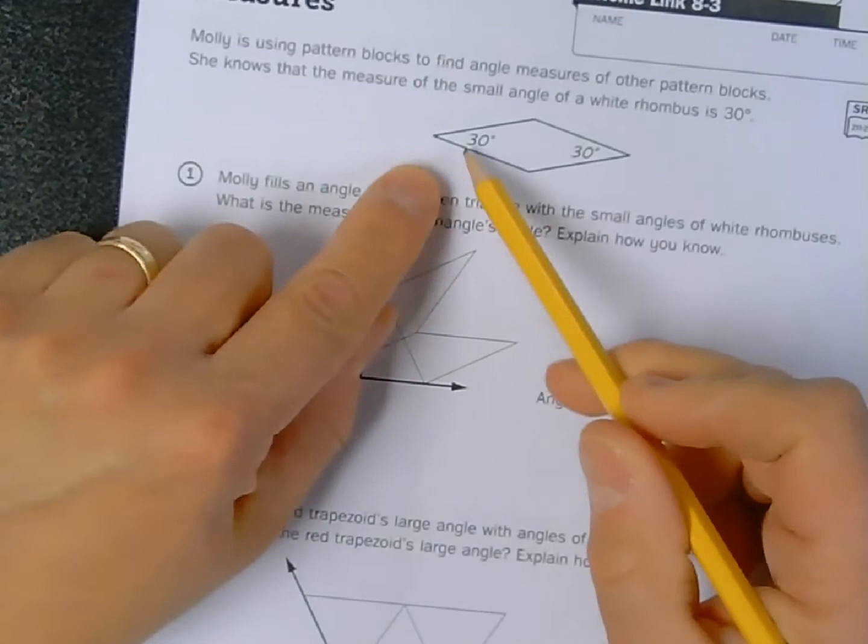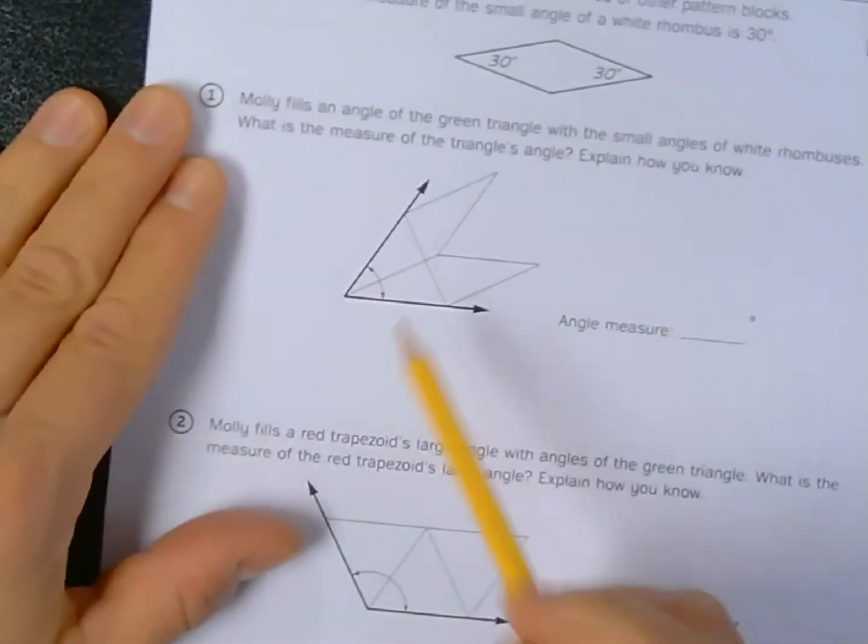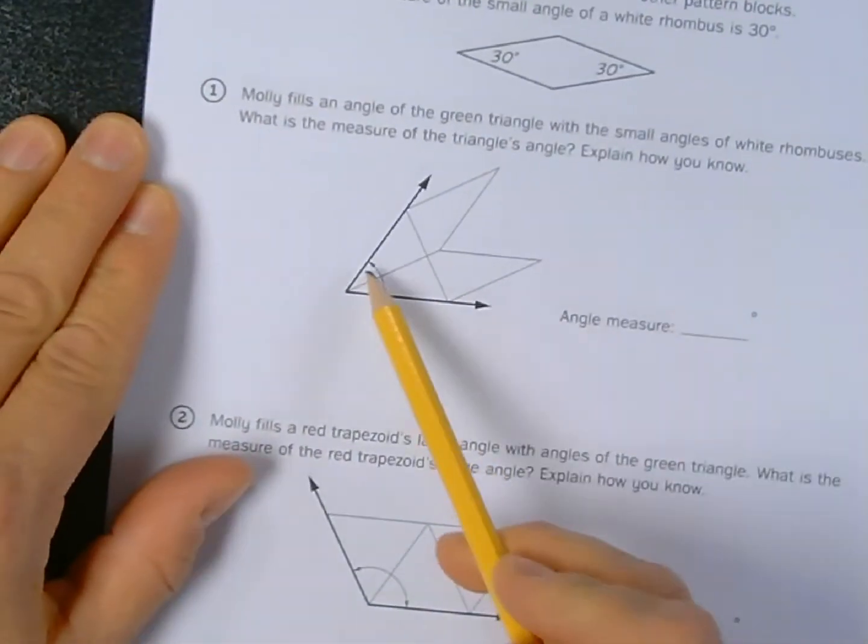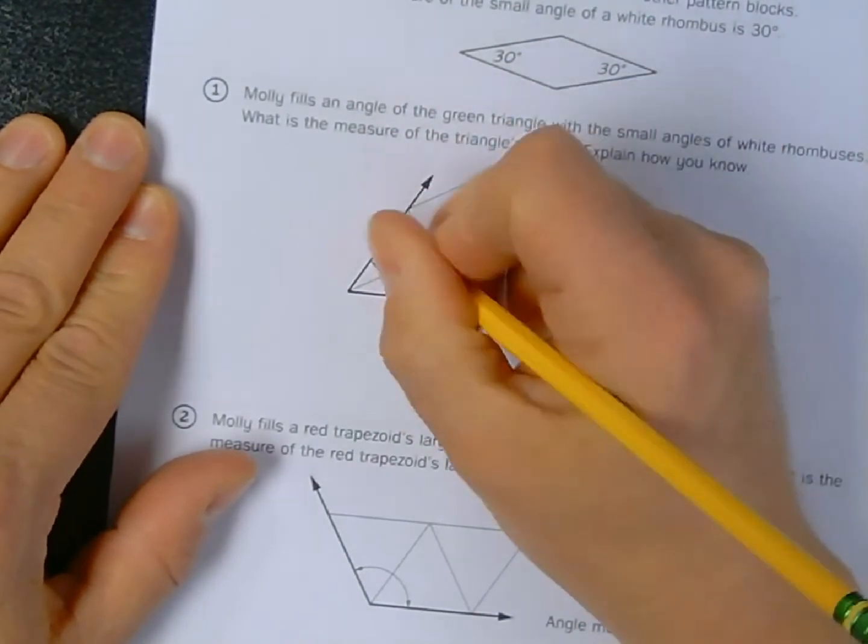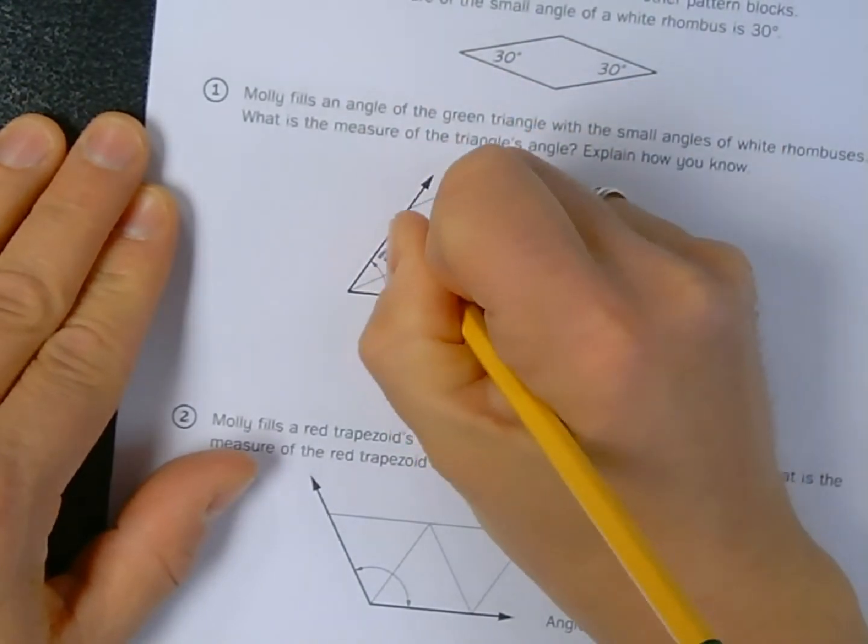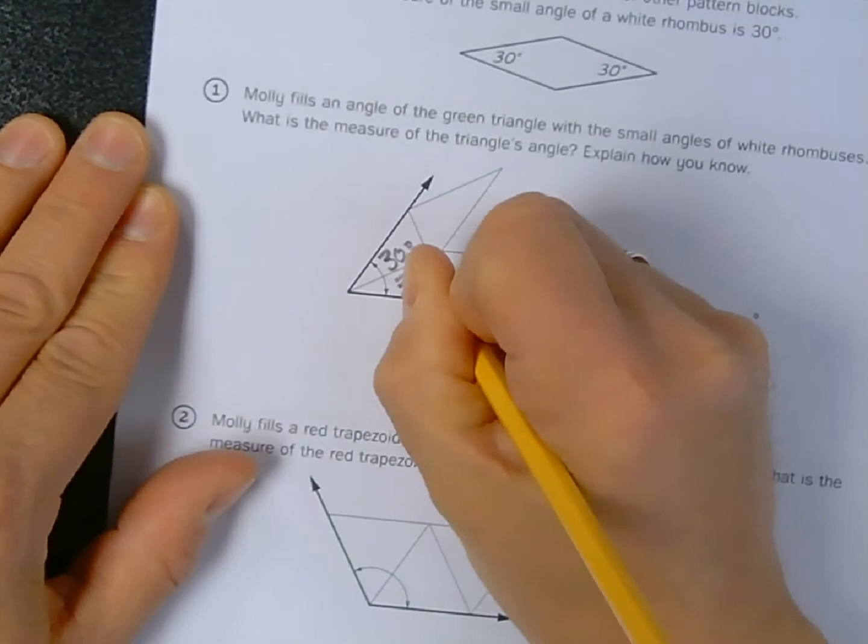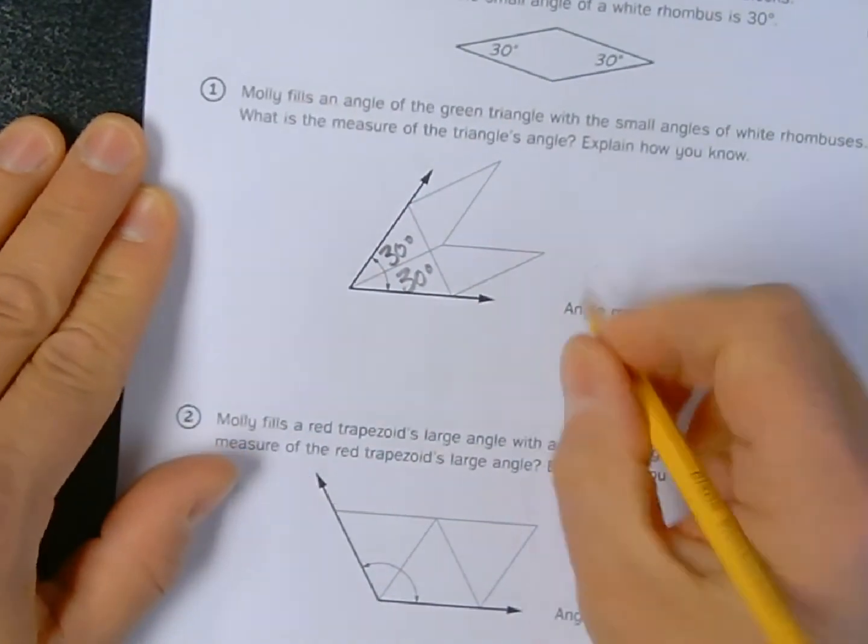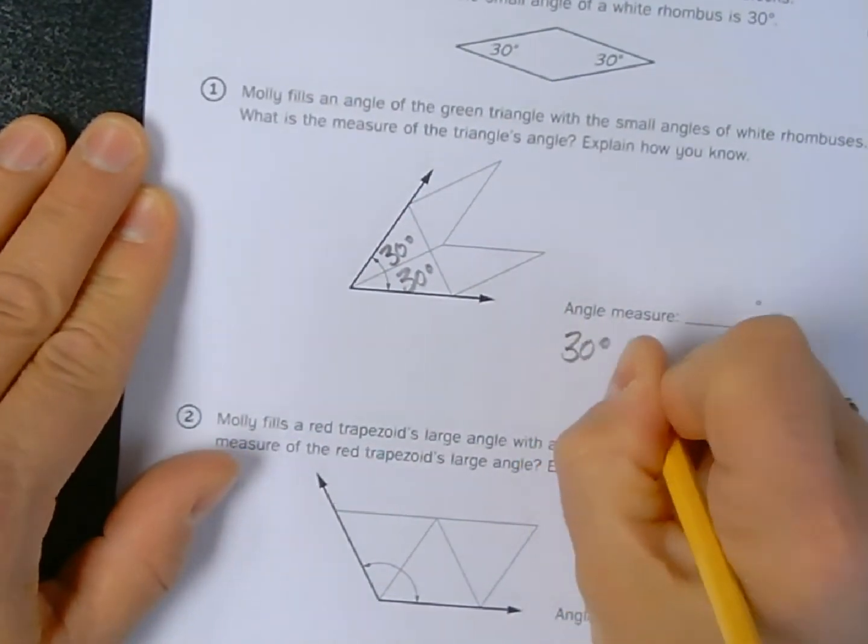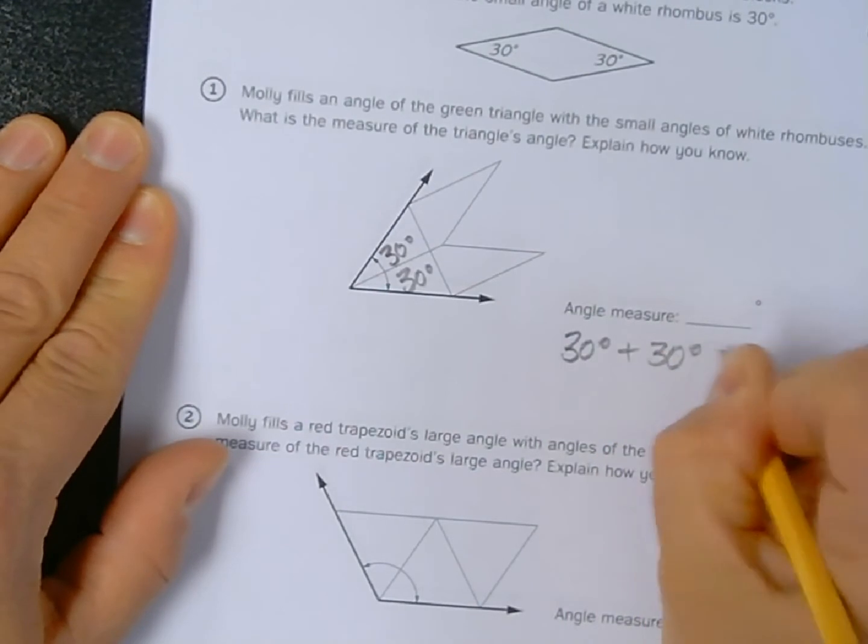Just knowing that this angle right here is 30 degrees will allow us to figure out the angle measurement here. I can just take the measurement from the rhombus and write it down in the space: 30 degrees here, 30 degrees here. So my angle measurement is 30 degrees plus 30 degrees.